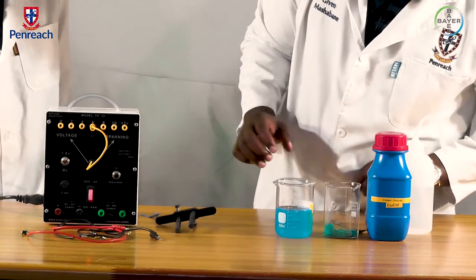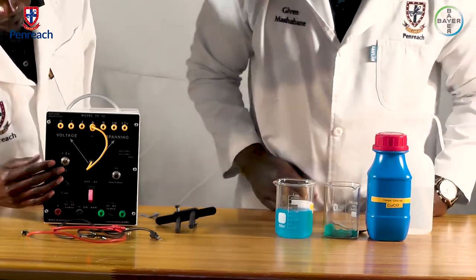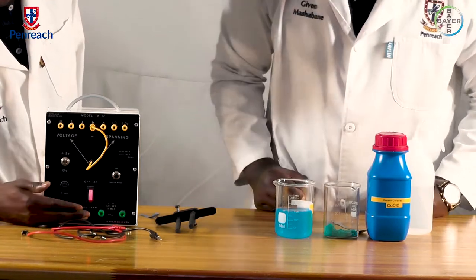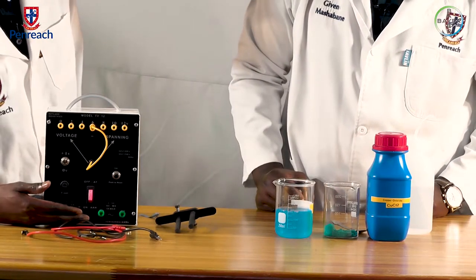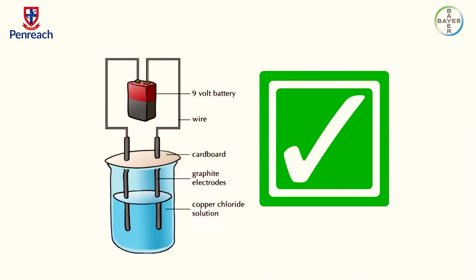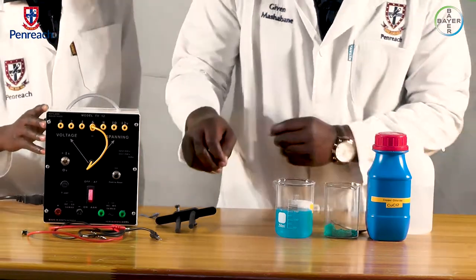And just tell us about the power pack. Now, we are using this type of power pack. It has AC and DC connection. For DC connection, it's direct current, so it's more like a battery. If you don't have a power pack, you can use batteries during this experiment. And we have our AC connection, which is alternating current.